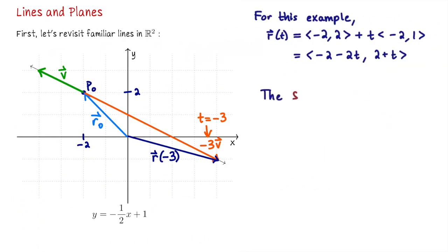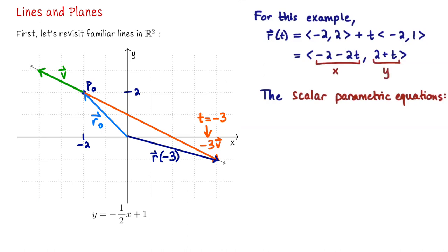Let's finish this discussion by looking at the scalar parametric equations for this line. Scalar parametric equations are found by looking at the equations for each coordinate. The first coordinate, negative 2 minus 2t, corresponds to the x coordinate; the second coordinate, 2 plus t, is the y coordinate. So the scalar parametric equations for this line are x equals negative 2 minus 2t and y equals 2 plus t. Each of these are scalar quantities — that's why we call these scalar equations.